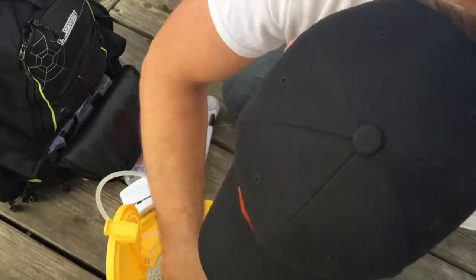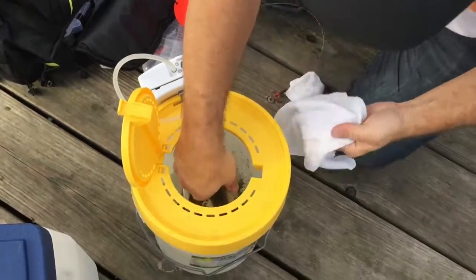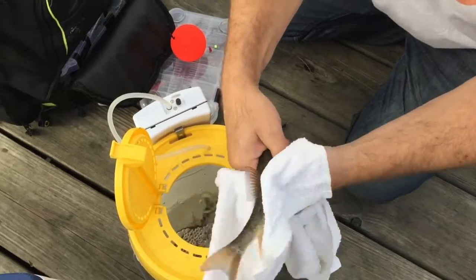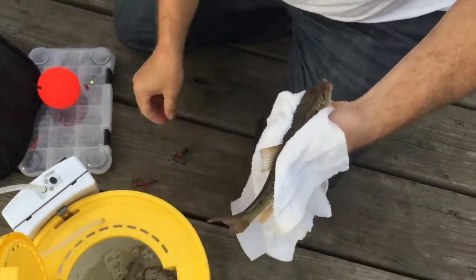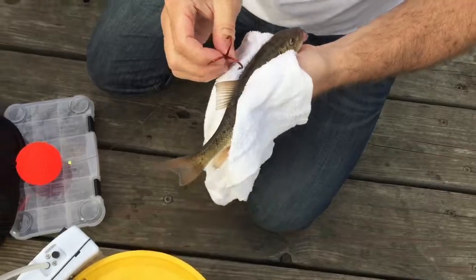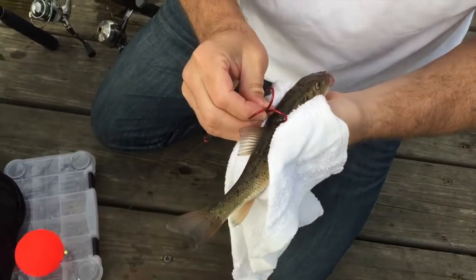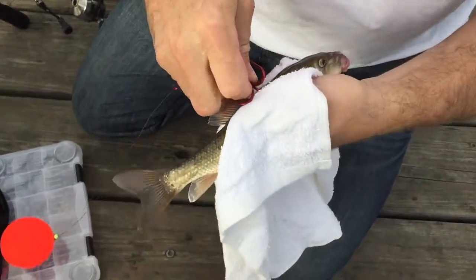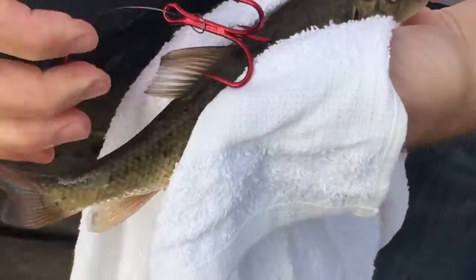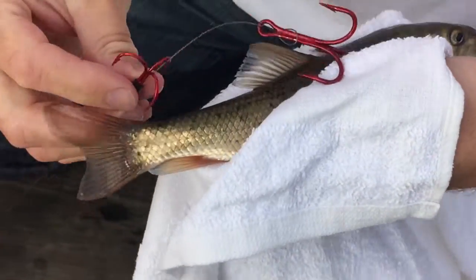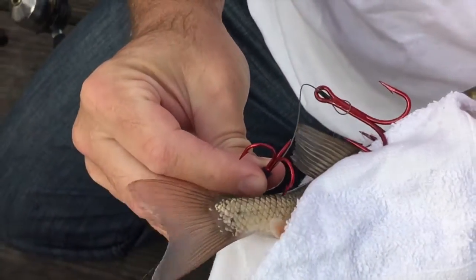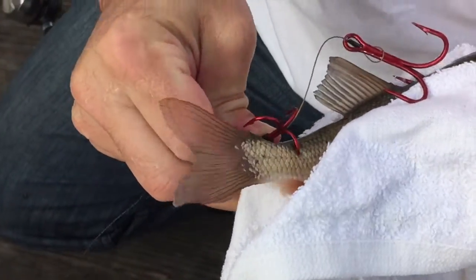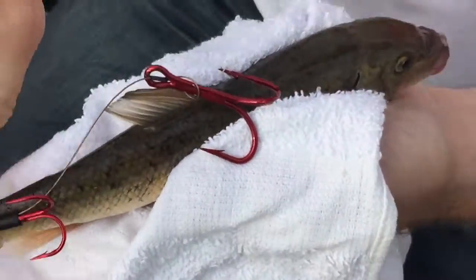First of all, I'm going to hold my fish on a towel so it doesn't get slippery and get off. I'm going to hook my first one right above the dorsal fin, and the second one right in the tail. Just like that.